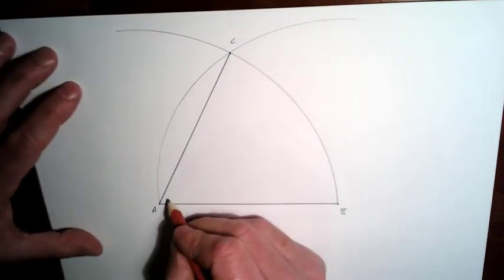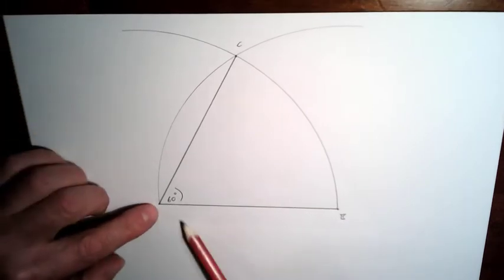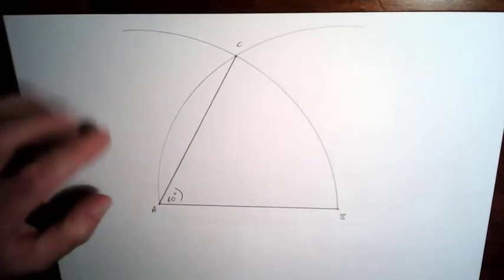And that should be 60 degrees. That's because effectively you've drawn two sides of an equilateral triangle.